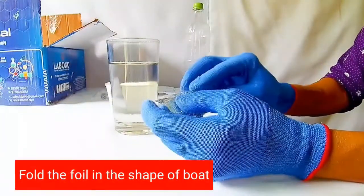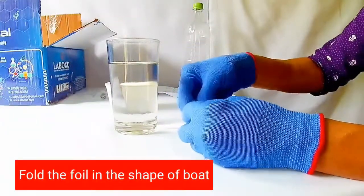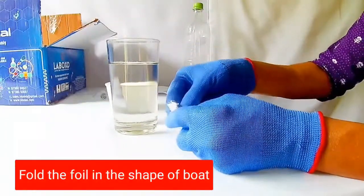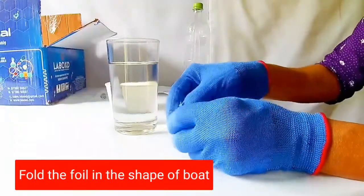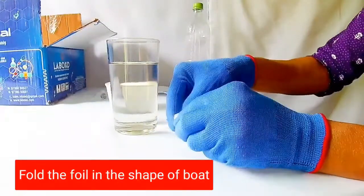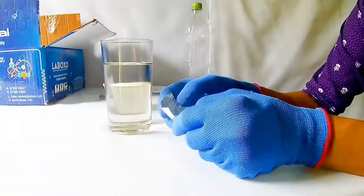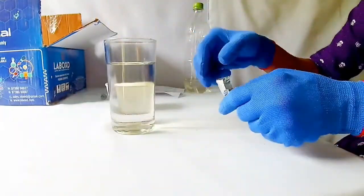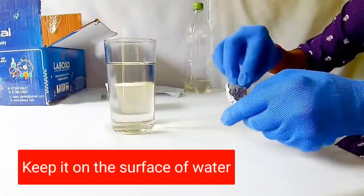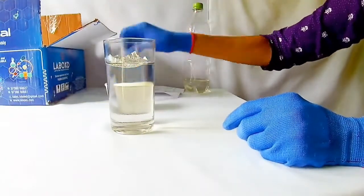Now fold the aluminium foil in the shape of a boat. Keep the aluminium boat on the surface of water.